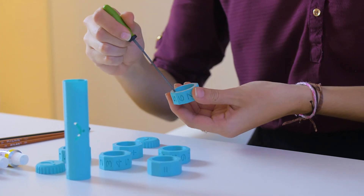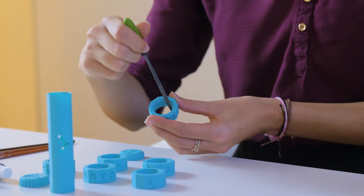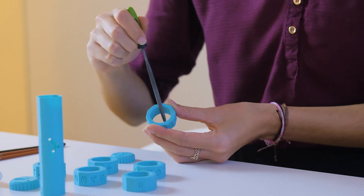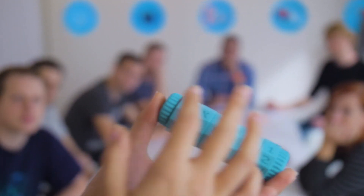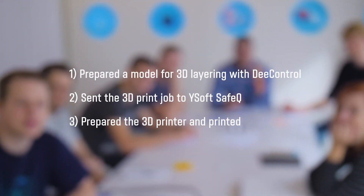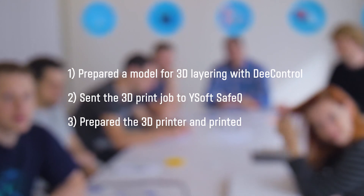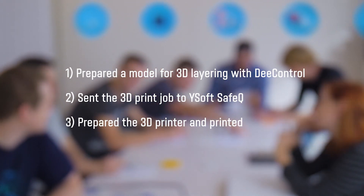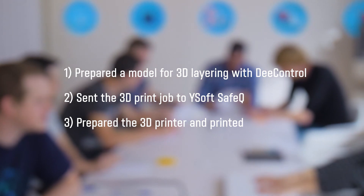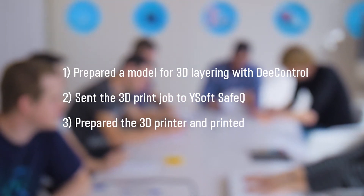Now I can use a spatula to remove any excessive glue or filament. Clean the glass with some water and place it back ready for the next print job. In case I printed a model with supports, I can easily break those off by hand or cut them out with some tools. I can also smooth the surface of the object or paint it. The material itself is very resilient. With these easy three steps, we have a finished 3D model. We used D-Control to prepare our digital file, sent it to YSoft SafeQ until we were ready to print, and finally prepared the printer and printed our model. Enjoy your 3D printing experience with YSoft B3D-ED.